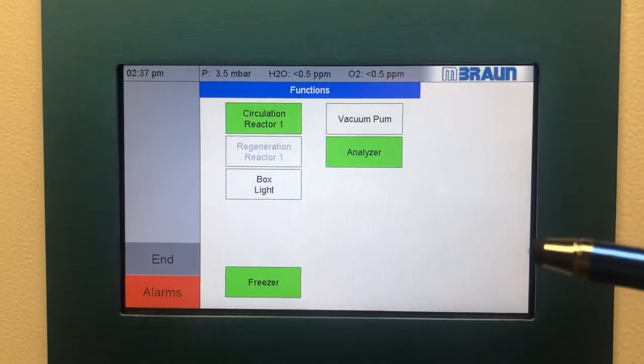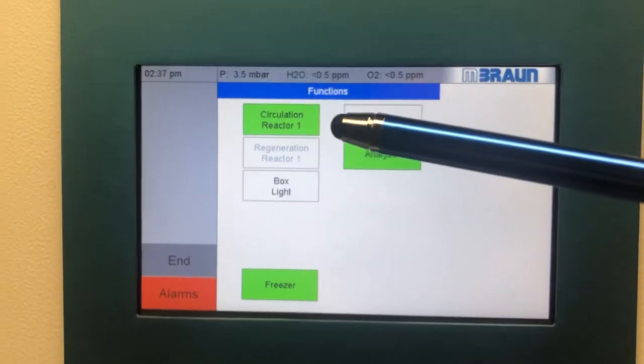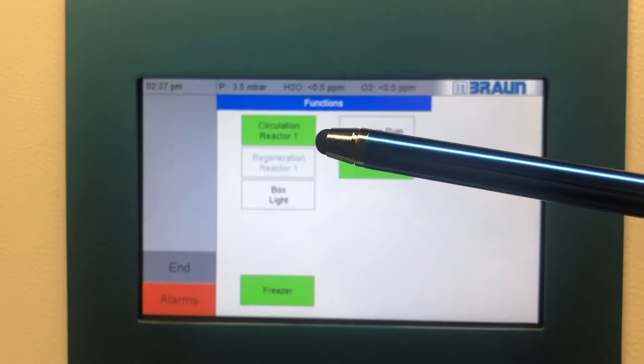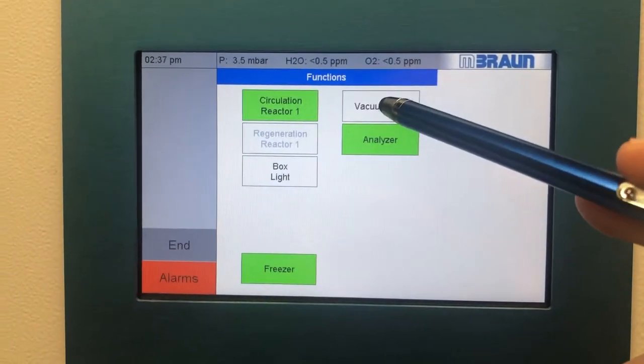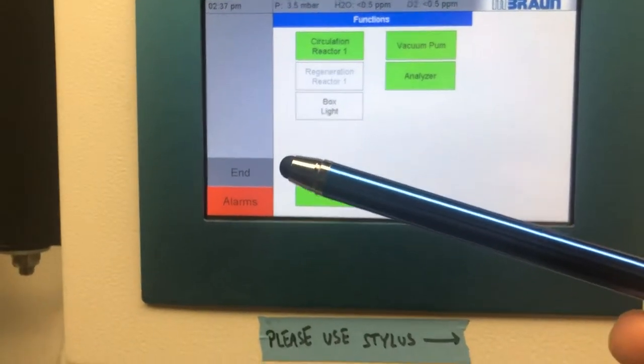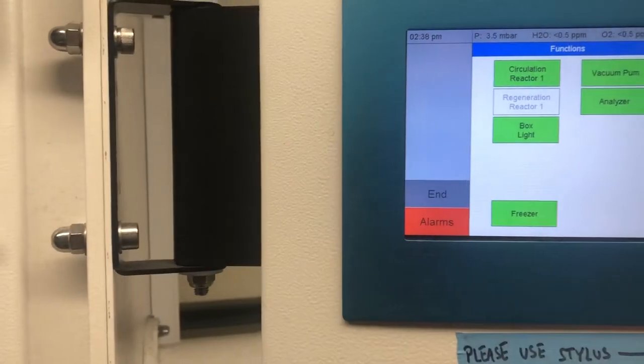Before using the glove box, you will have the circulation on and you want to turn on the vacuum pump. Always use the pen. If you're going to be entering into the chamber, then go ahead and turn on the box light. This illuminates the chamber.